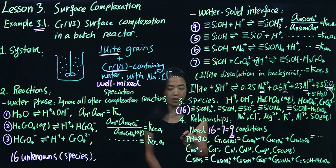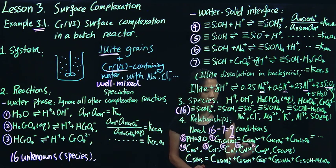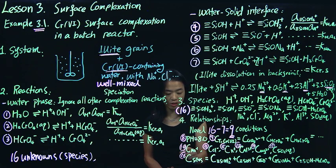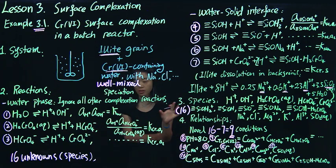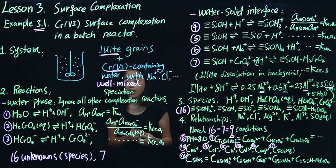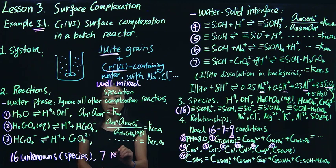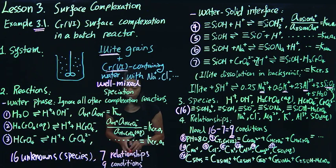So if you look at this, you count conditions 7 through 16 — that's 9 additional conditions. This gives a closed-form system: 16 unknowns with 7 reaction relationships plus 9 specified conditions that together fully define the system. You will end up solving for the equilibrium concentration of each species, both aqueous and surface, since the system reaches equilibrium very quickly.